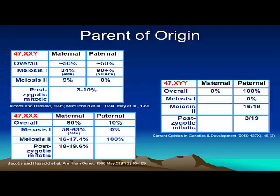Briefly, to review where the extra chromosomes come from: for XXY, overall half come from the mother and half come from the father, some of which are from post-zygotic mitotic divisions. For XXX syndrome, the majority of the extra X comes from the mother, and there is a larger percentage that actually occurs after fertilization. For XYY, because the Y chromosome has to come from the father — females don't carry it — 100% are from the father.